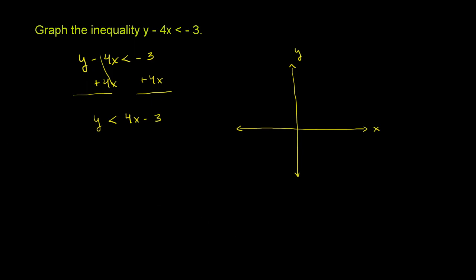So the boundary line would look like, let me write it over here. So we have a boundary at y is equal to 4x minus 3. Notice this isn't part of the solution. This isn't less than or equal. It's just less than. But this will at least help us draw, essentially, the boundary.